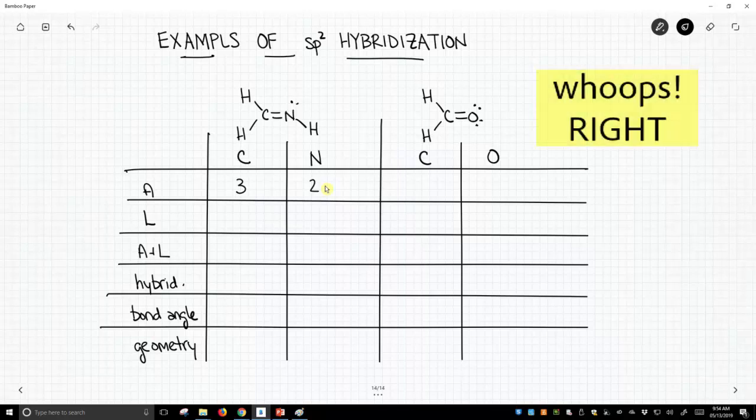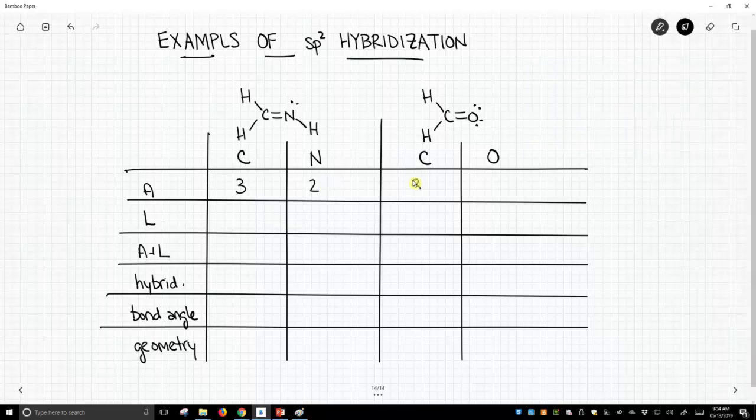Moving continuing to the left, the carbon on the next structure, called formaldehyde, that carbon has three attached atoms, two bonds to hydrogens, and two bonds to one oxygen. So that's three attached atoms. And the oxygen has just one attached atom.